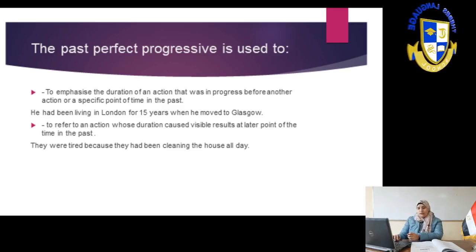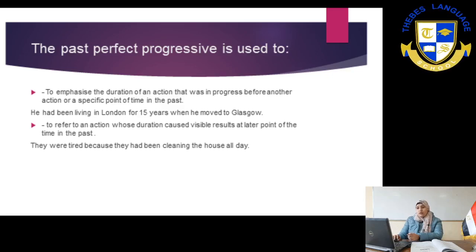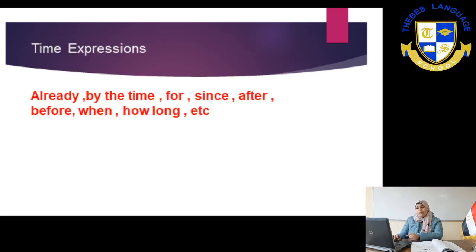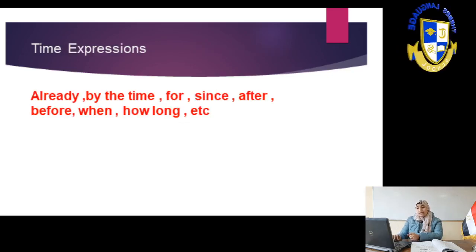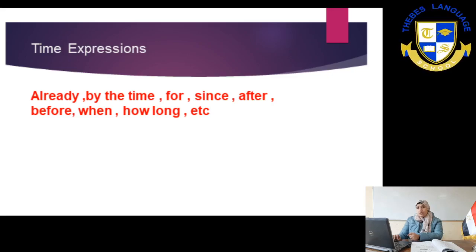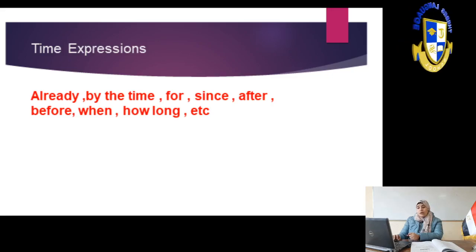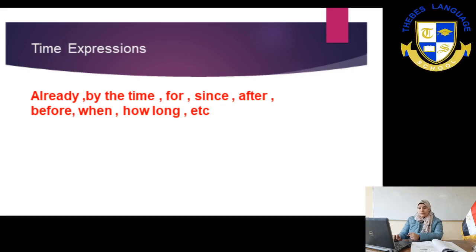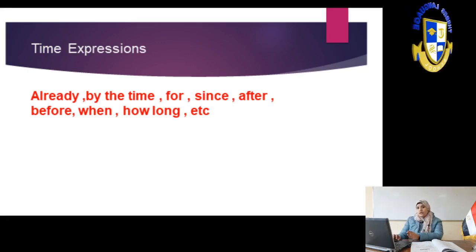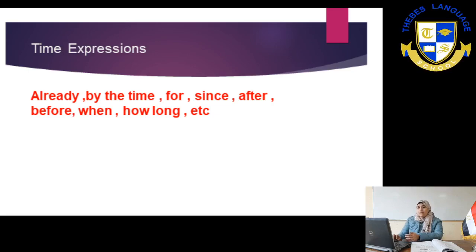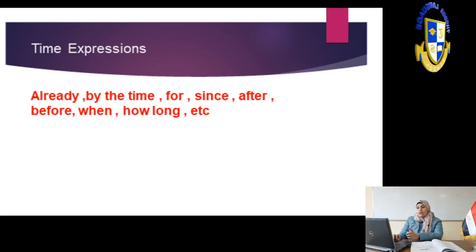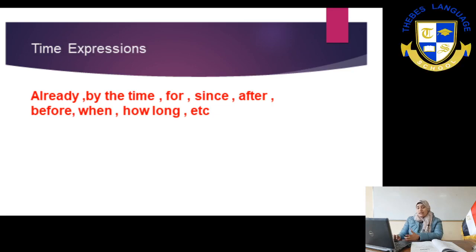We also have time expressions for the past perfect progressive: already, by the time, for, since, after, before, when, and how long. As mentioned before, these keywords can be used for many tenses, so take care that they are not the only main indicator for your choice of tense.